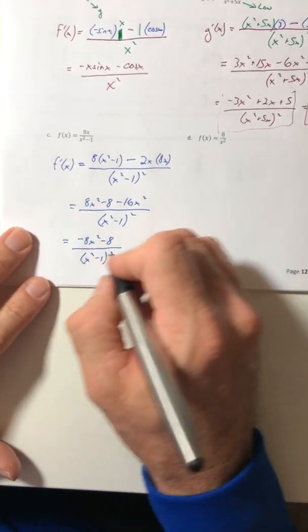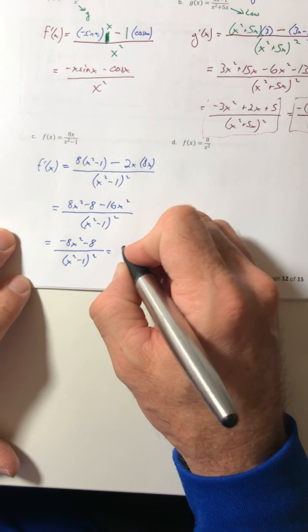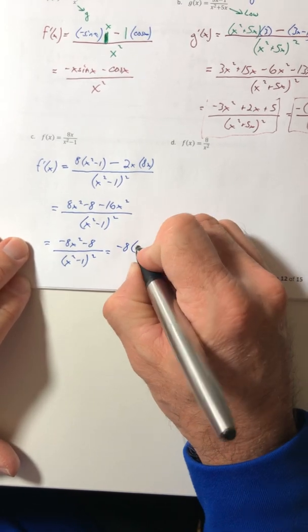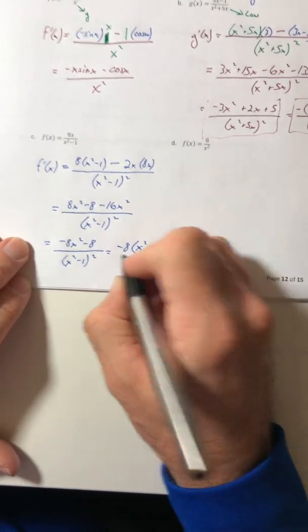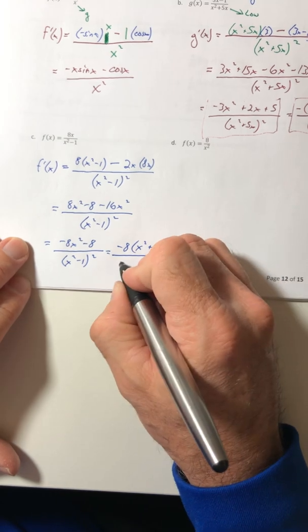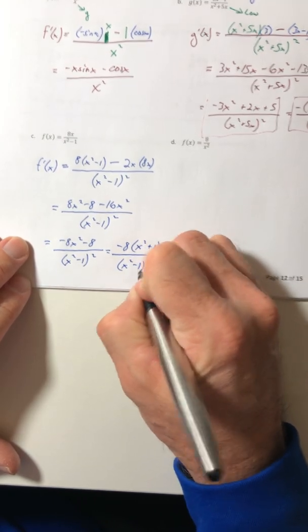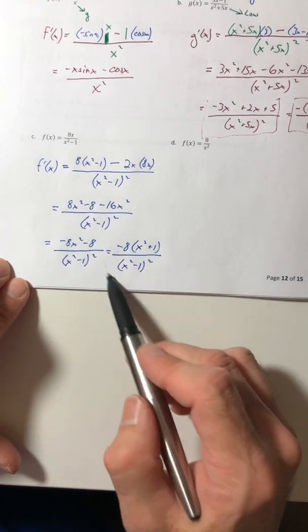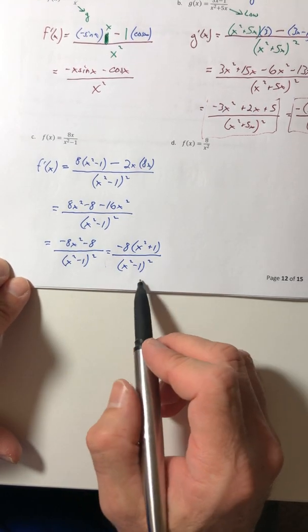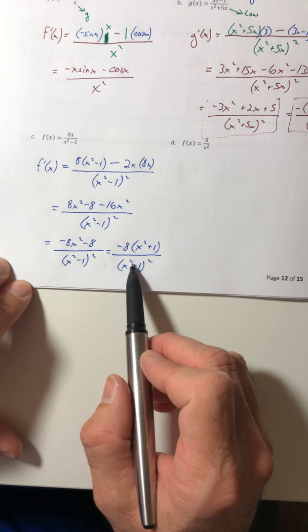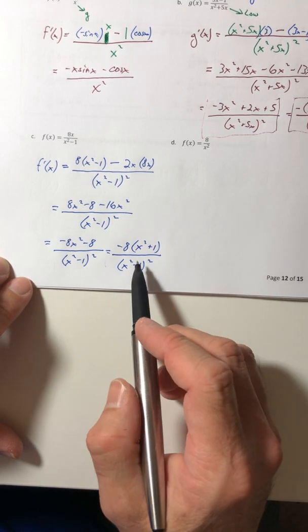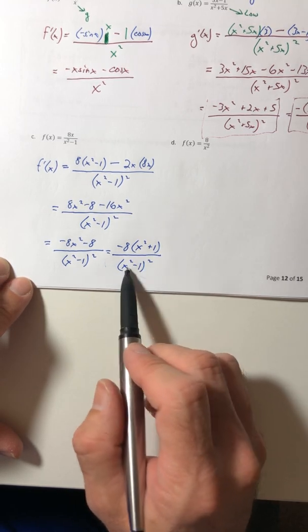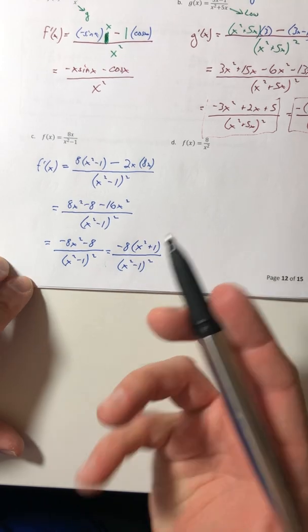So negative 8x squared minus 8 all over x squared minus 1 quantity squared. And if you wanted to, you can pull off a negative 8. So you have an x squared plus 1 all over x squared minus 1 squared. And whether you have it like this or the factor version, that's all you can do. Nothing's going to cancel. You can factor x squared minus 1 out, but it's not going to give you any factor that cancels that x squared plus 1 off.